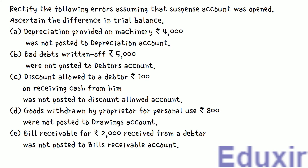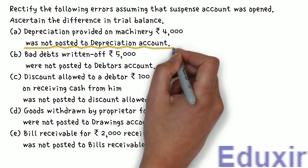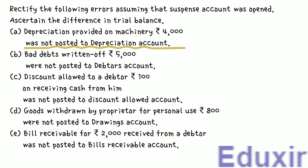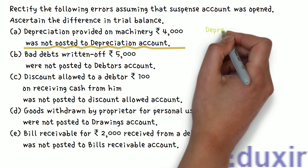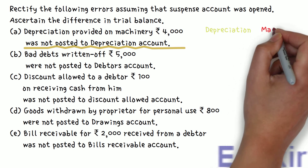Let's start with the analysis of the first error. In this case, 4000 rupees of depreciation provided on machinery was not posted to Depreciation Account. Let's first analyze the original transaction. Depreciation is an operating expense. In this transaction, the machinery is depreciated, so we have to post an operating expense. We should debit the Depreciation Account with 4000 rupees.